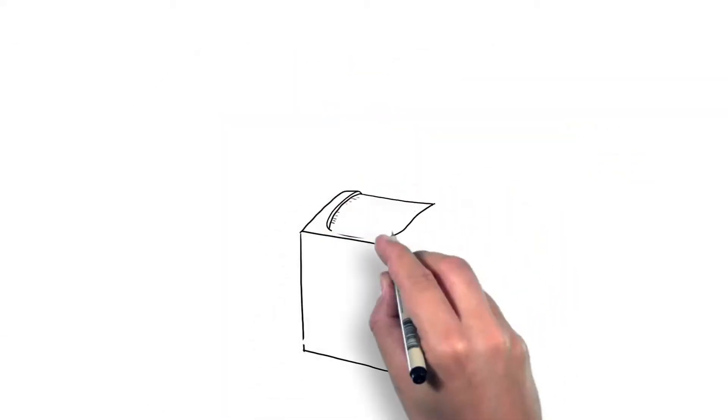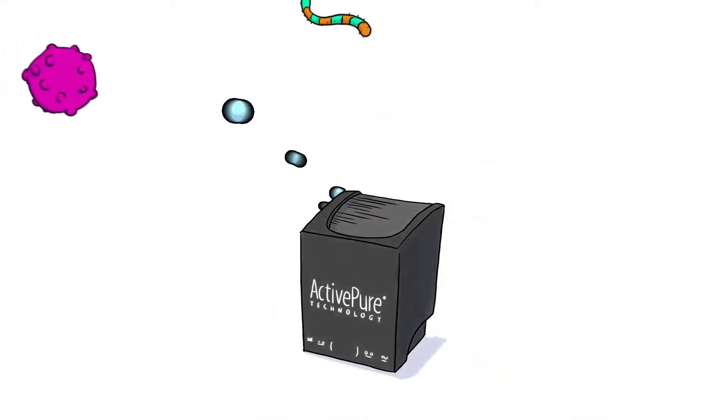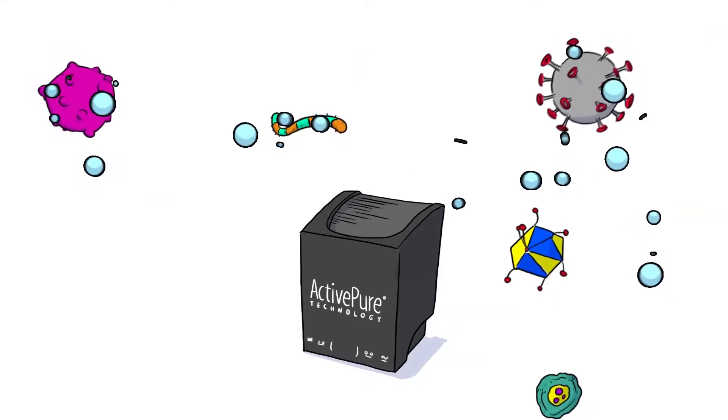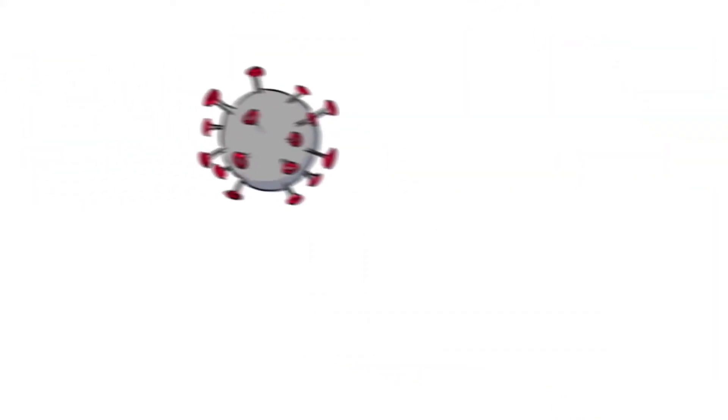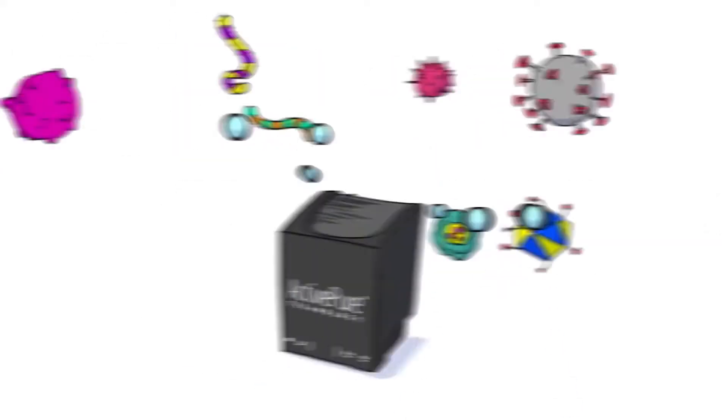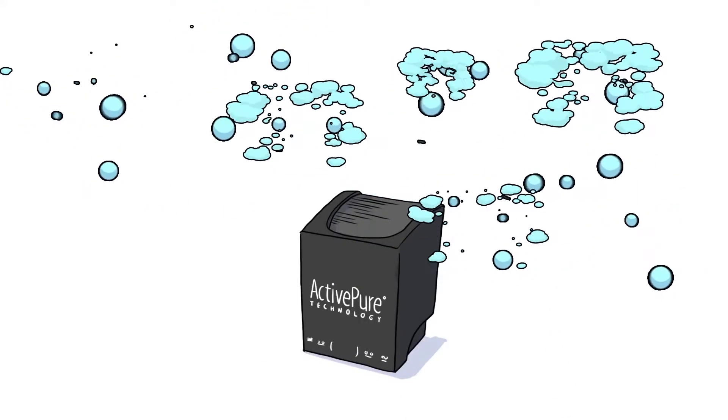So how does it work? The ActivePure system dispatches invisible supercharged sub-microscopic particles at tremendous speed. The particles collide with viruses, bacteria, and other nasty things and immediately turn them into harmless byproducts.